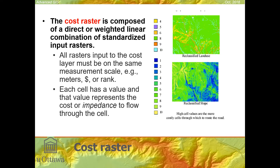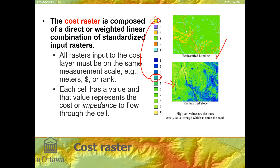In an example, a cost raster might be composed of a direct or weighted linear combination of standardized input rasters, where the standardization scale could be meters, dollars, or some ranked or scale-by-function system. As long as a cost of 1 in a reclassified slope layer is the same as a cost of 1 in a land use layer — and a 4 in one is the same as a 4 in the other in terms of the cost of travel — these equivalencies, just like in multi-criterion evaluation, are fundamental. The key difference is that we're talking about movement through a cell and everything must be in terms of cost.